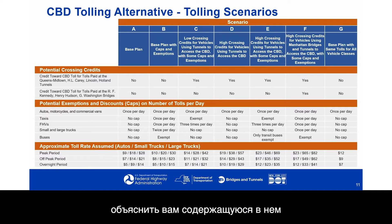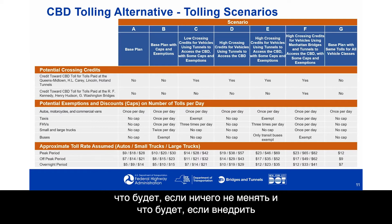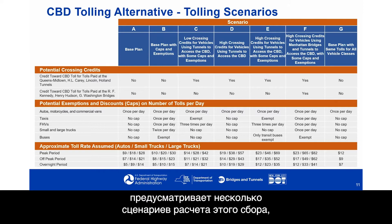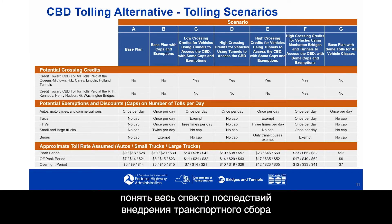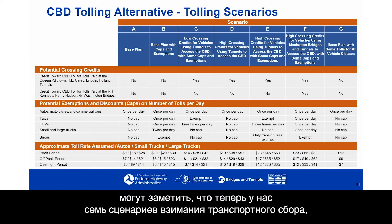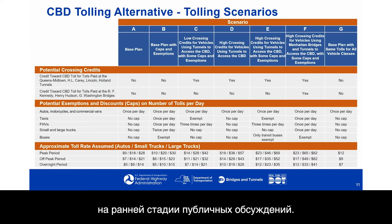Within the Central Business District Tolling Alternative, there are a number of tolling scenarios that vary in several ways. Modeling these different scenarios helped understand the full range of effects, since the decision on the actual tolling scenario has not yet been made. Those who participated in early outreach may notice there are now seven tolling scenarios instead of the originally discussed six — an additional scenario was added as a result of concerns raised during early public outreach.